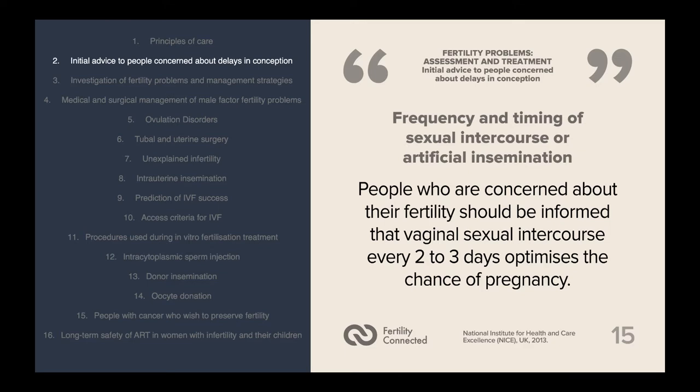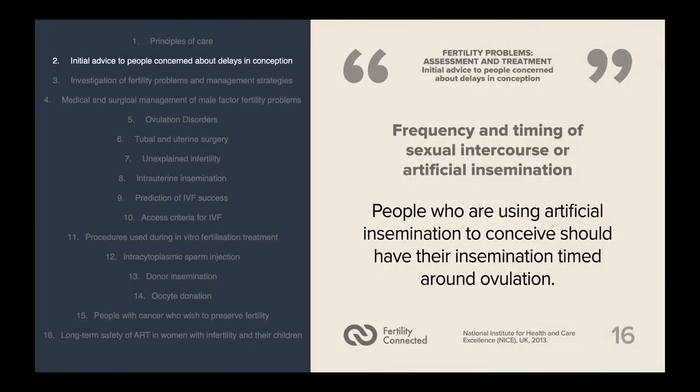Consider the frequency and timing of sexual intercourse or artificial insemination. People concerned about their fertility should be informed that vaginal sexual intercourse every two to three days optimizes the chance of pregnancy. People using artificial insemination to conceive should have their insemination timed around ovulation.